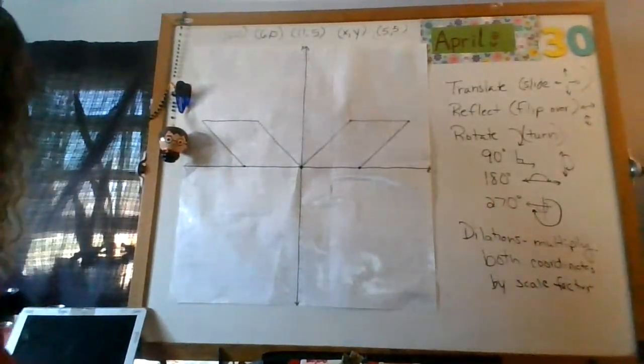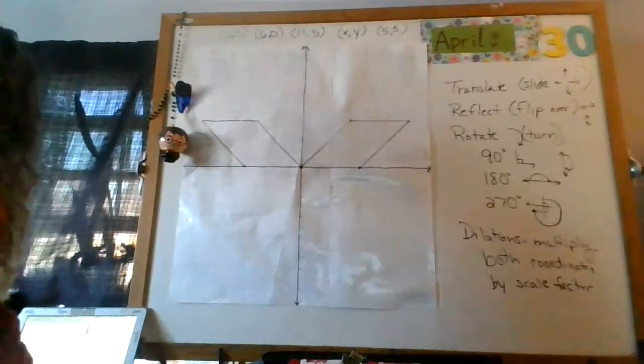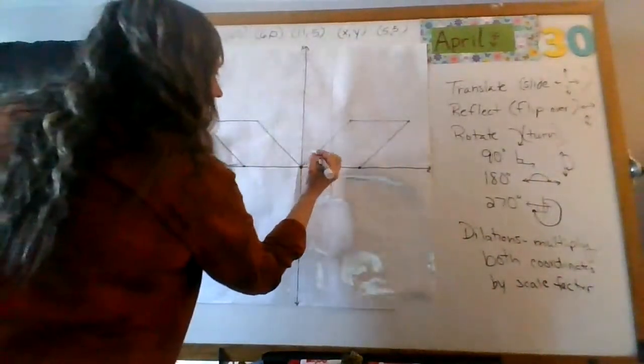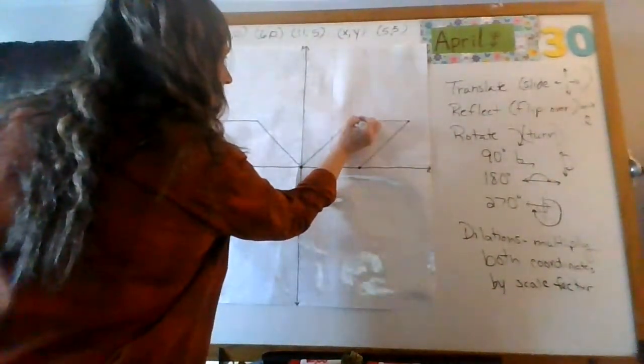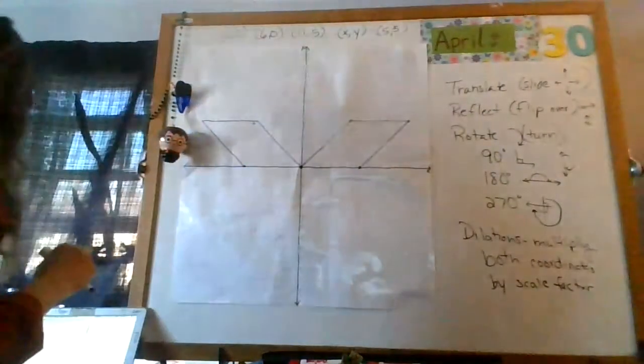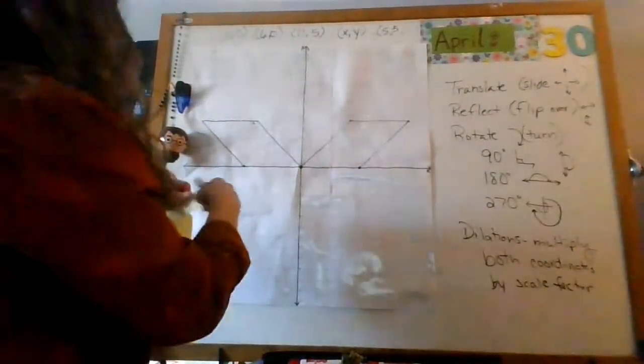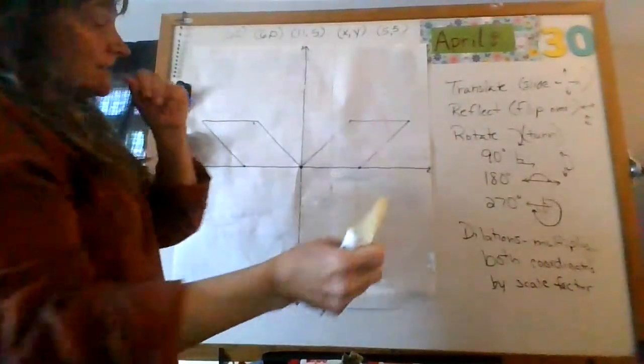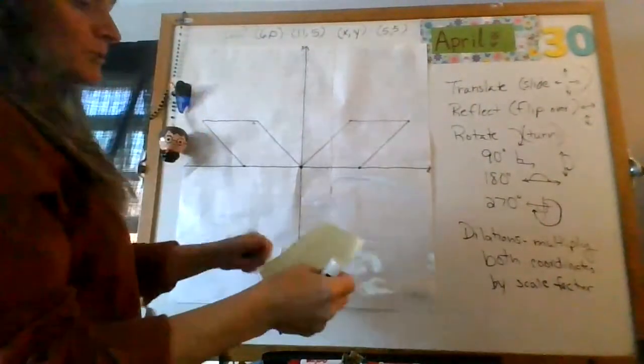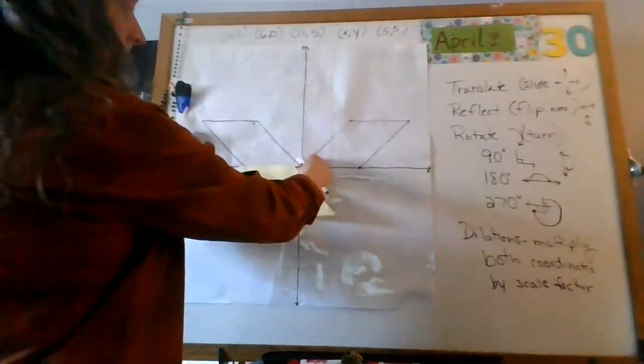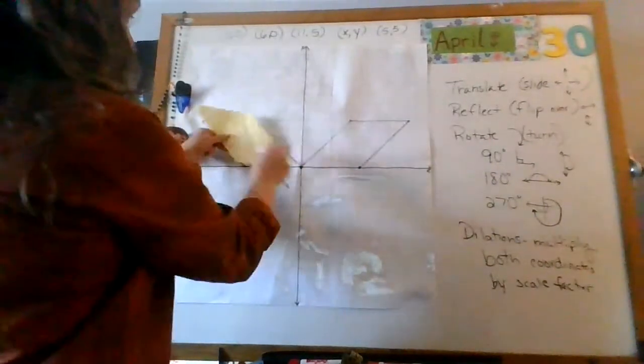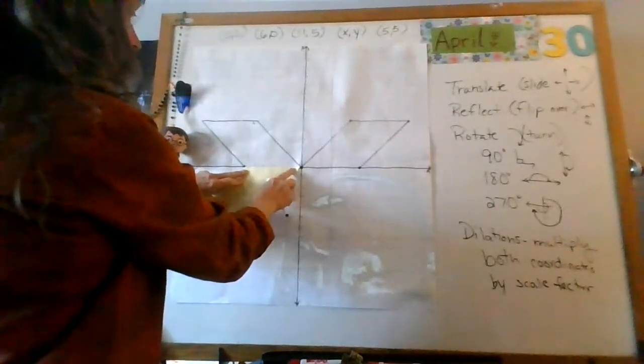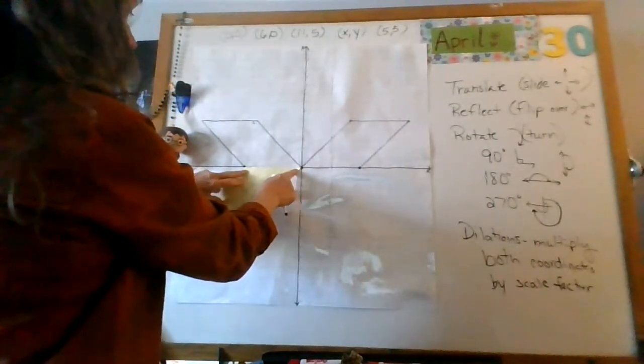My next set of directions say number three, reflect number two over the X axis. This is my X axis. So, if you do this, you absolutely have to match it up. You can't just go, oh, it's going to be like this. No. Match it up. And it's going to reflect over. And I have to keep that last line exactly the same. So, it's going to go to here. That one's there.